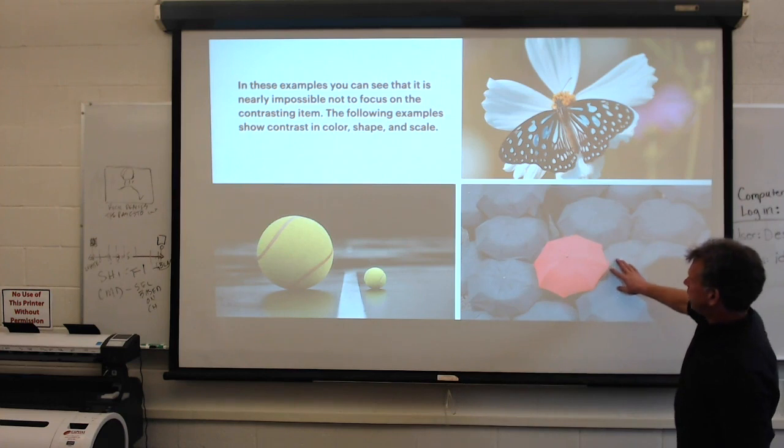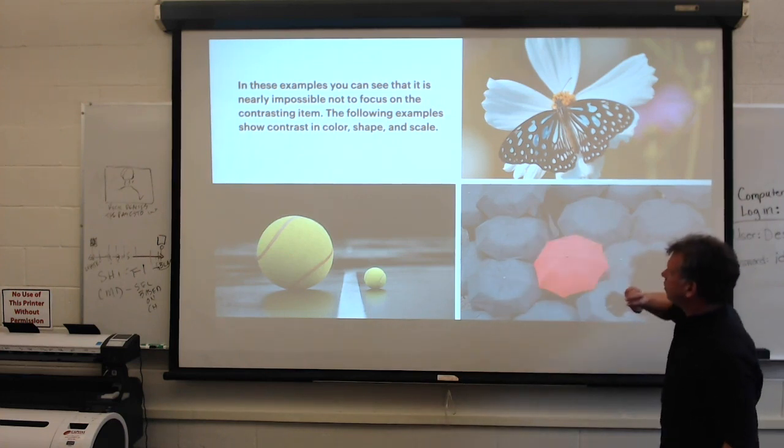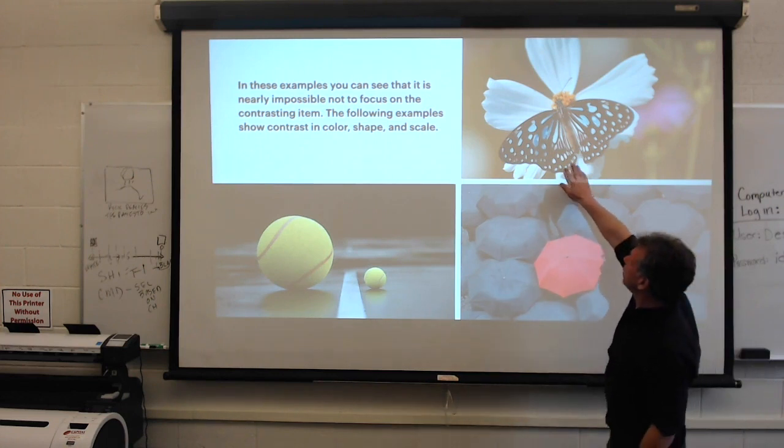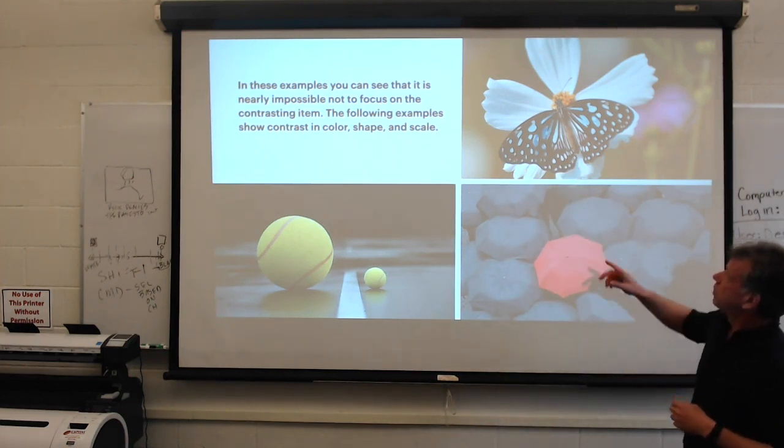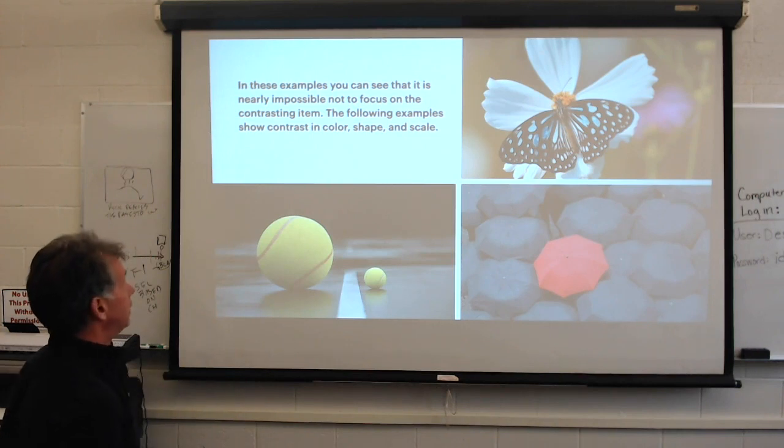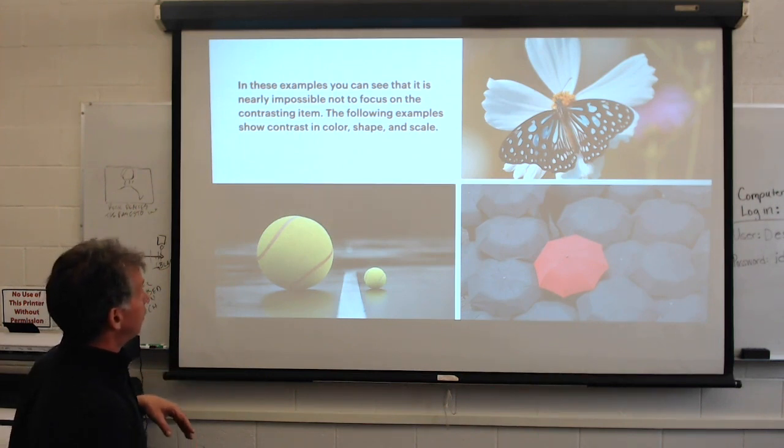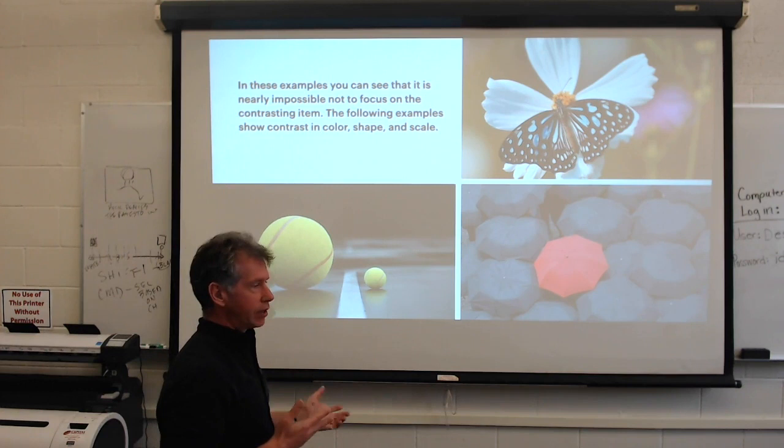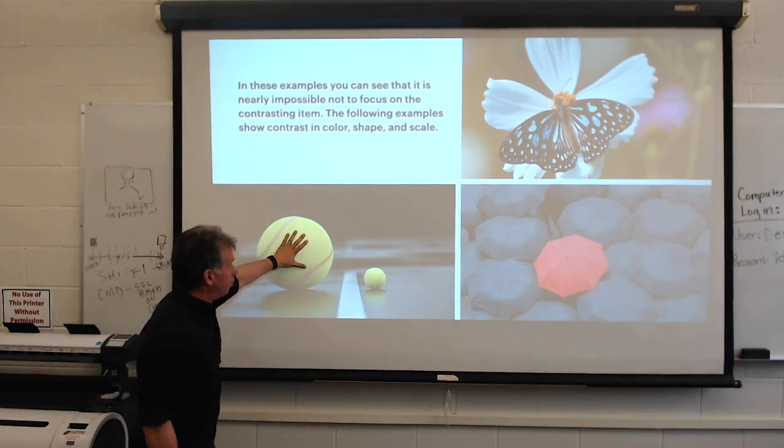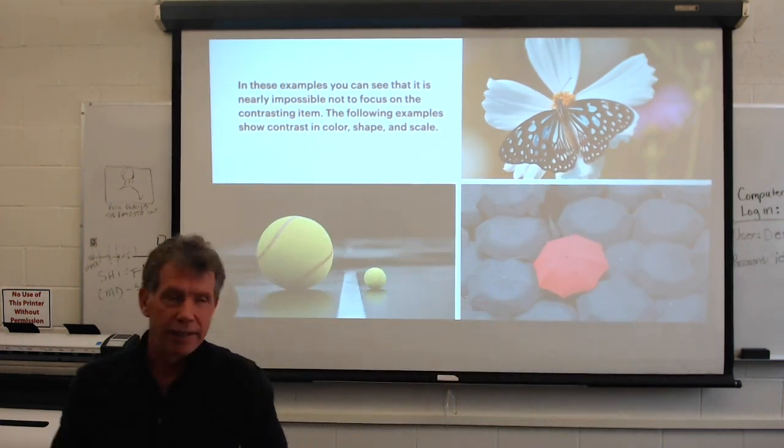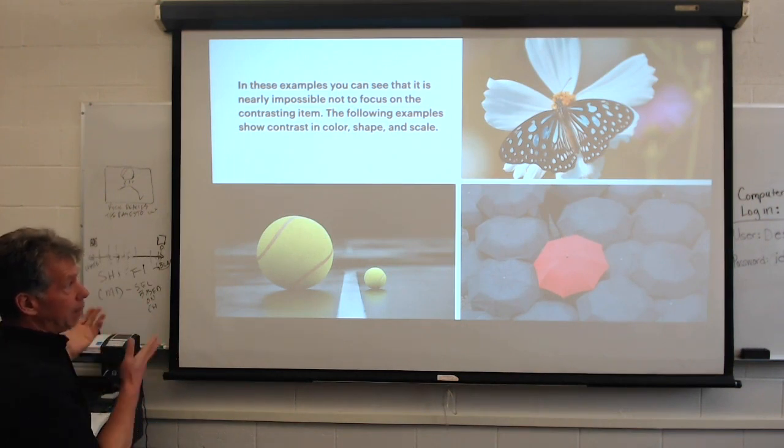Here, the dominance is placed on color. All the shapes are the same. The only thing that's different is the color. And our mind thinks that this is more important. Here, because the butterfly has a certain shape, our mind looks at that and understands that that's what this is about. In these examples, you can see that it is nearly impossible not to focus on the contrasting item. The following examples show contrast in color, shape, and scale. Now, you've already seen these for a little while, but when you first looked, what was it that you focused on? My guess is you focused on the big ball, the red umbrella, and the butterfly. And those are the reasons that humans see things a certain way is because of the contrast. Big, color, and shape.